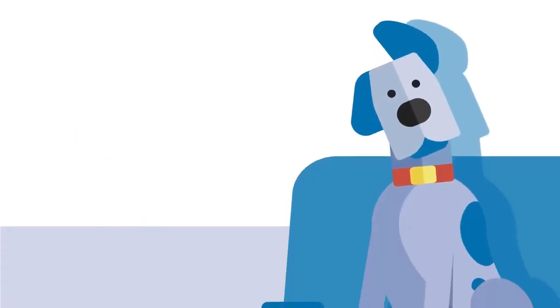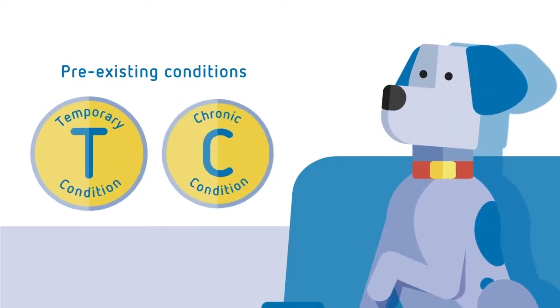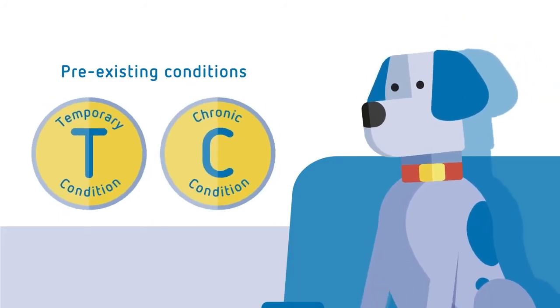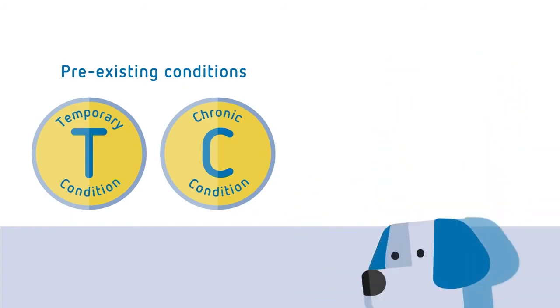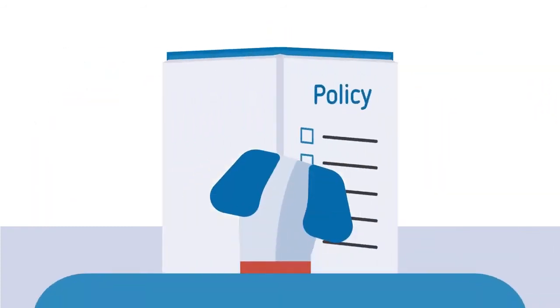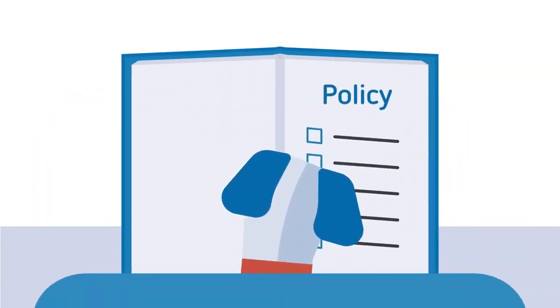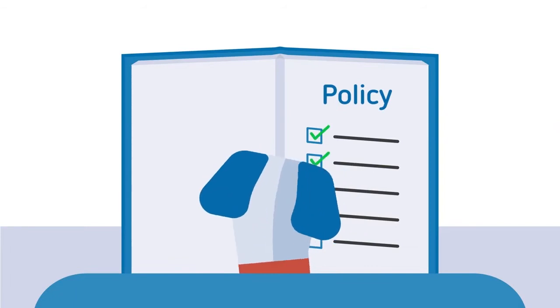It's important to remember that these exclusions only relate to pre-existing conditions. If your pet requires treatment after you've bought a pet insurance policy and after the waiting period, all conditions outlined in the policy's product disclosure statement will be eligible for cover for the life of the policy.